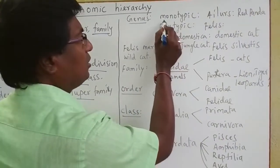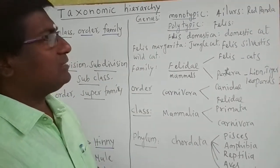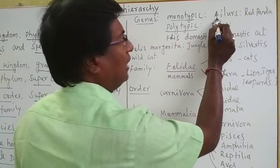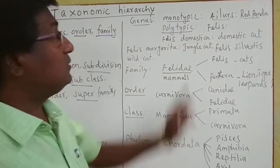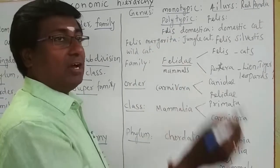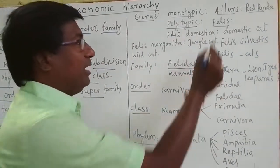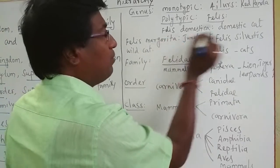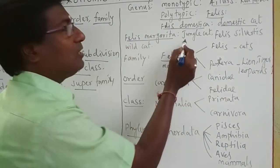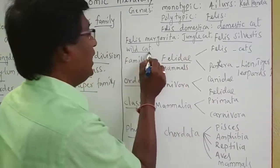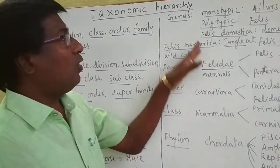Genus is nothing but one or more closely related species placed under it. There are two types: monotypic and polytypic genus. A monotypic genus has only one species — for example, Ailurus, which contains only the red panda. A polytypic genus has many species — for example, Felis is a polytypic genus containing Felis domestica (domestic cat), Felis margarita (jungle cat), and Felis silvestris (wild cat). So many species are put under one genus.